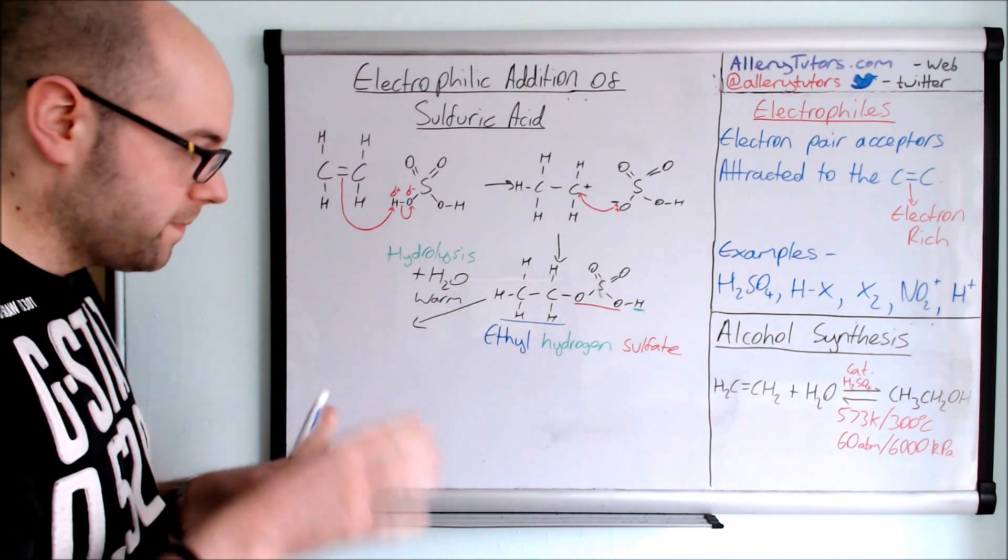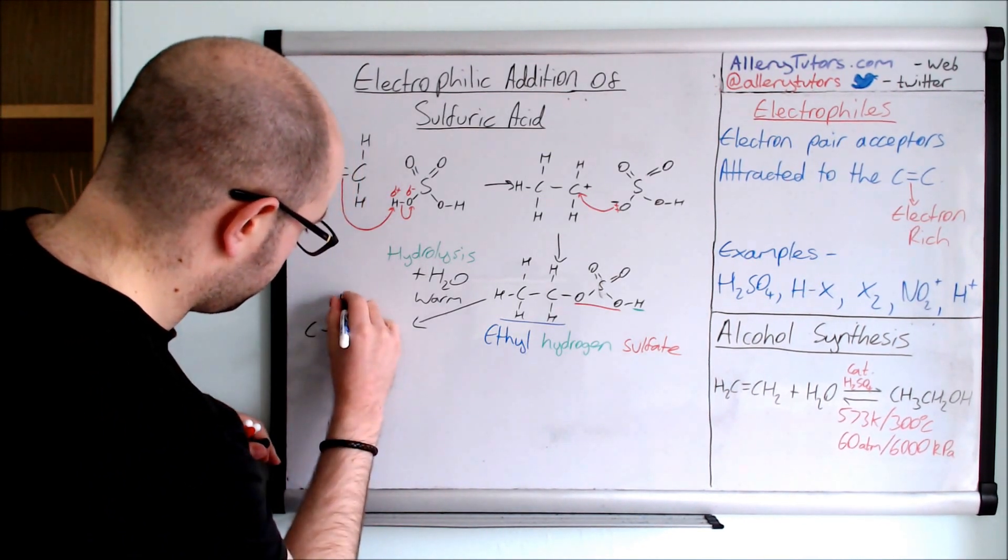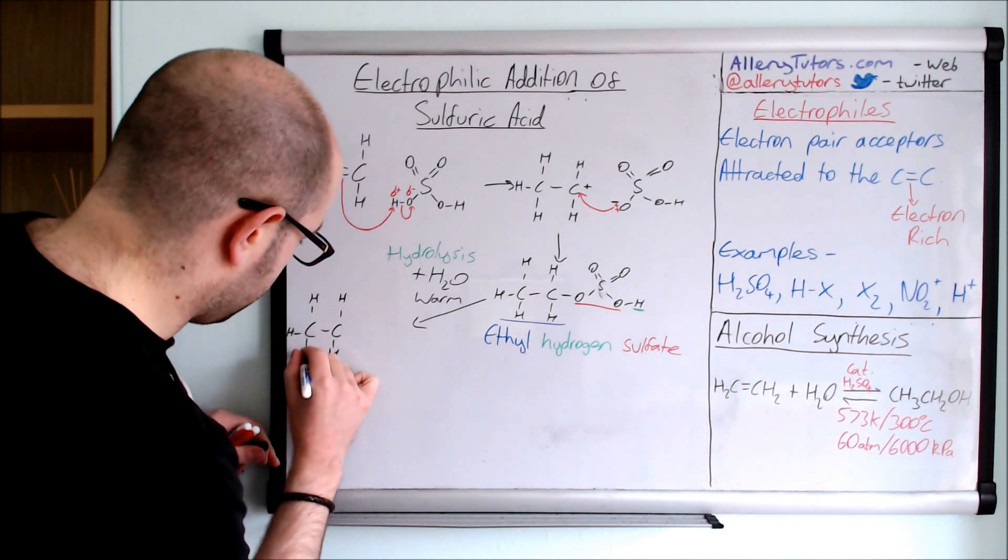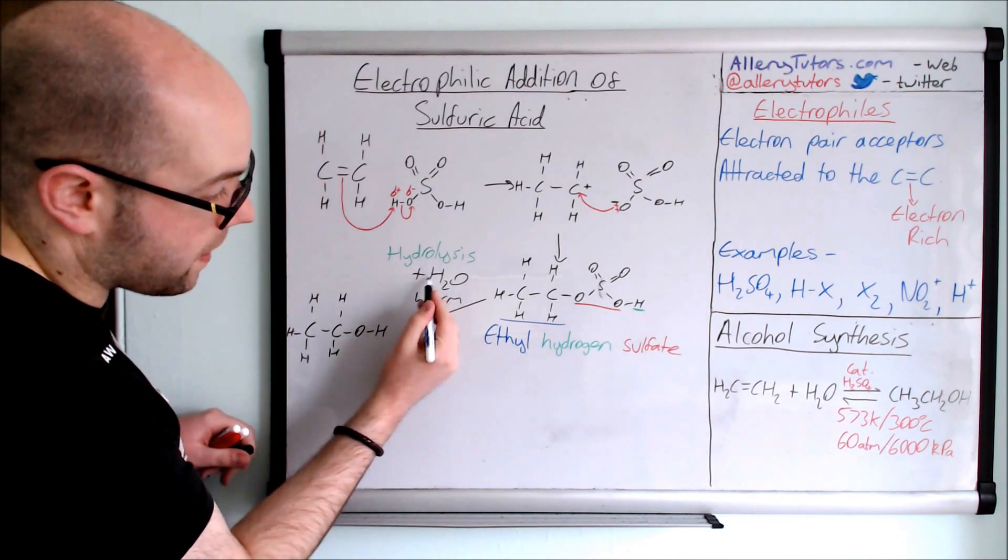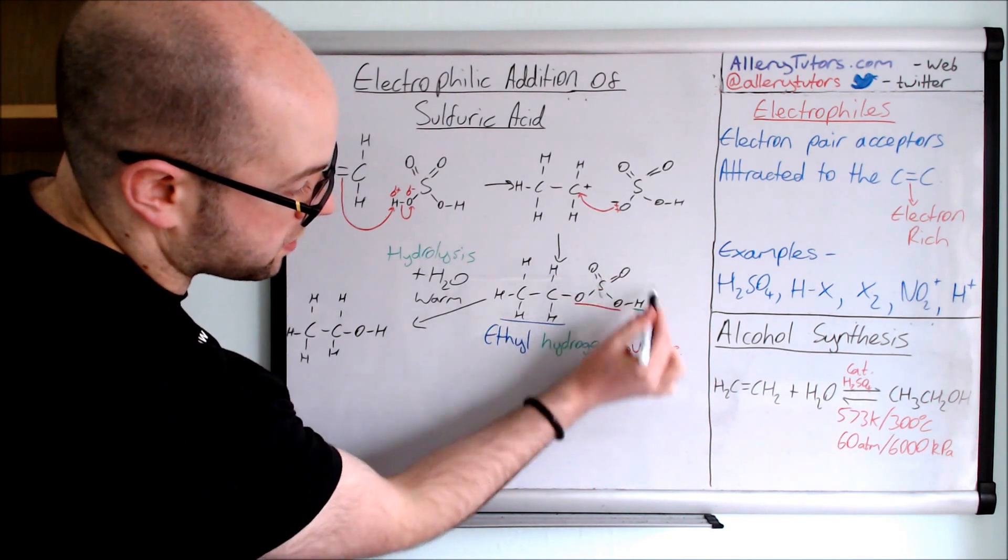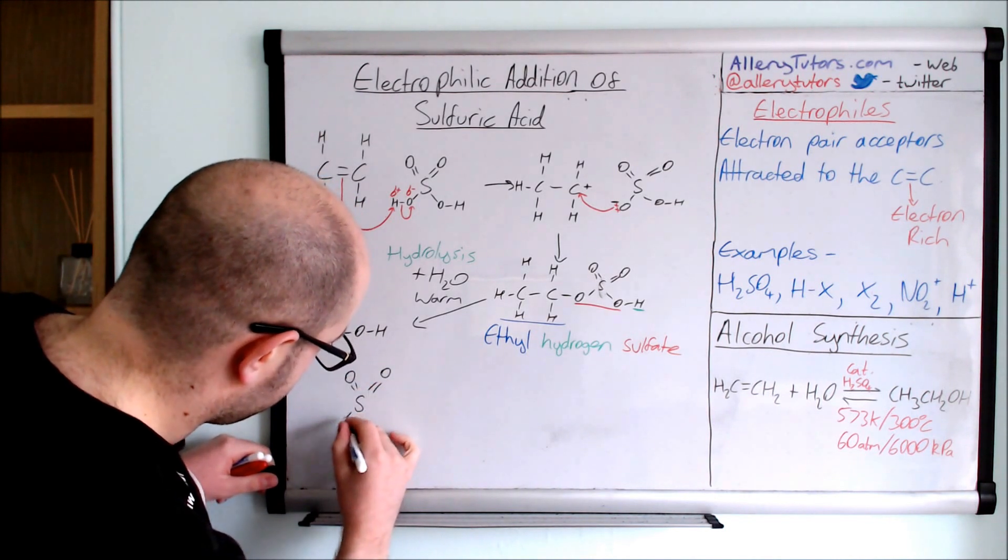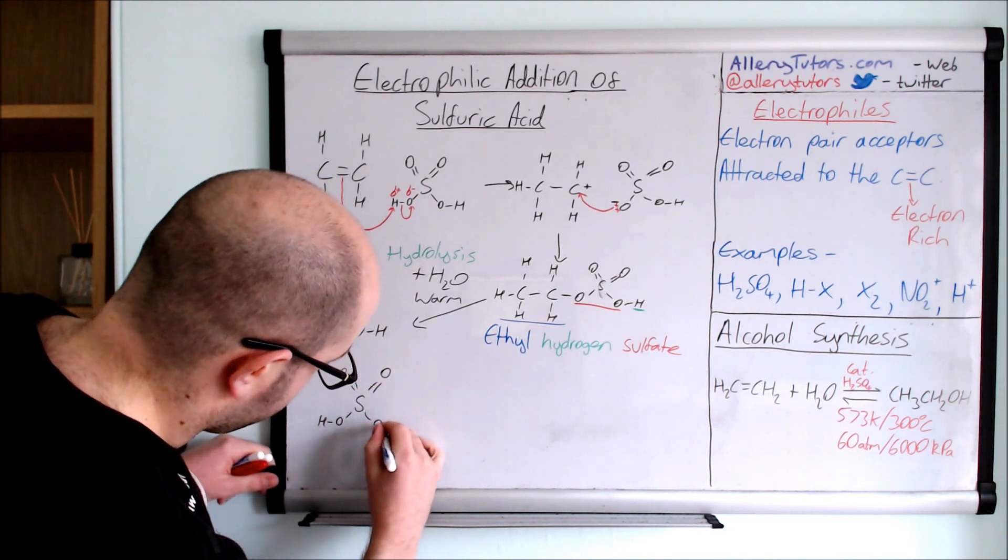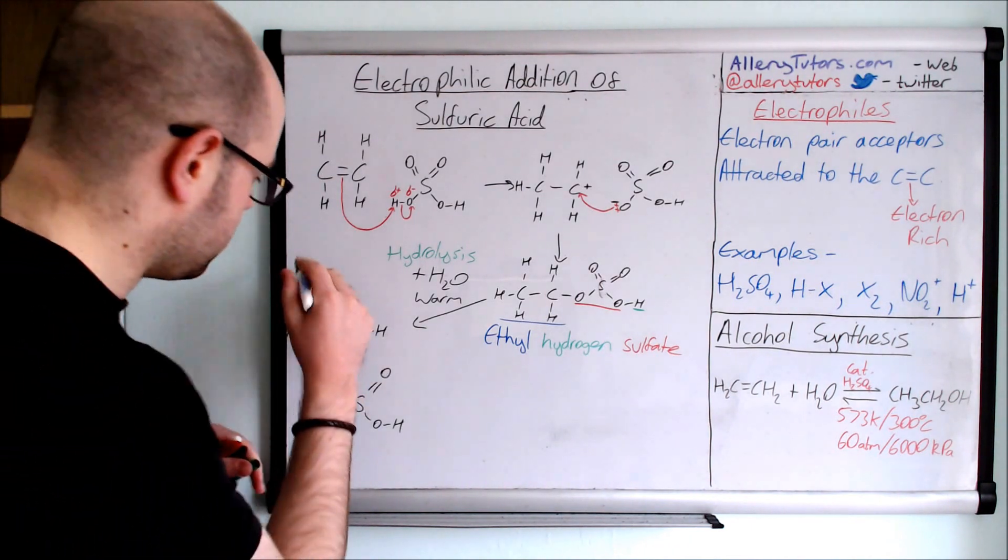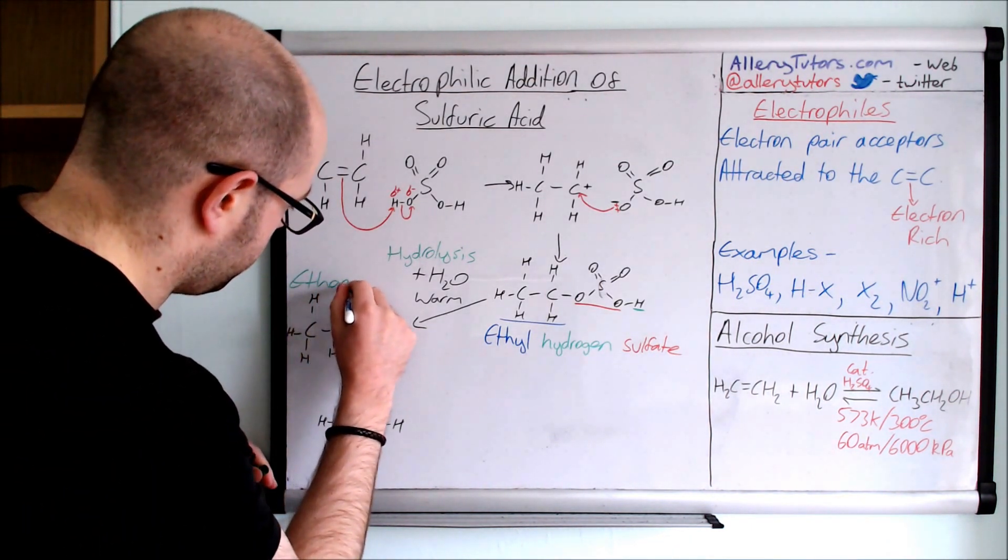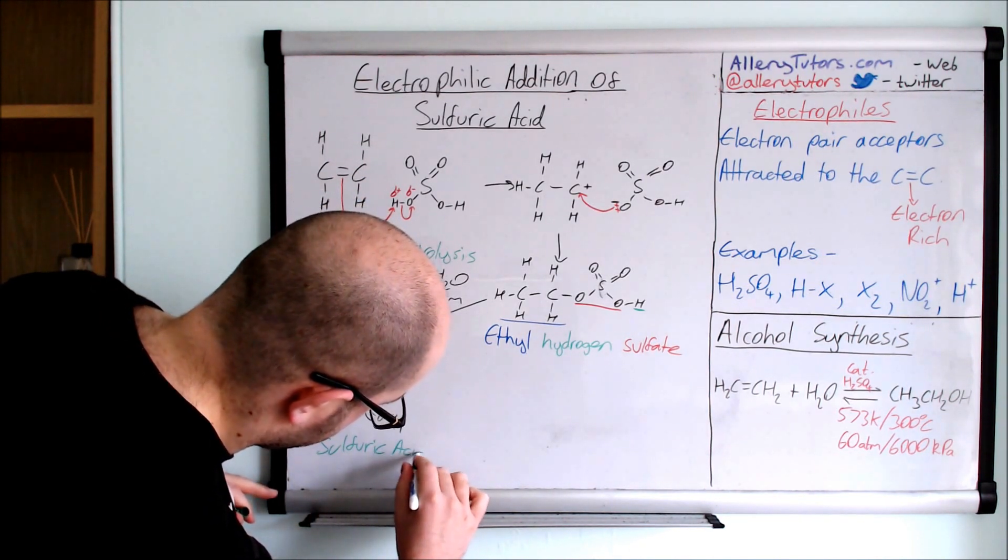And then effectively what you form is you form your ethyl. So let's draw the displayed formula. Lots of hydrogens. The OH, OH. So this OH has come from the water. There's a hydrogen left over and that hydrogen loops onto here because this has got to break off. And then effectively what we're left with is our sulfuric acid back again. There you go. There's your sulfuric acid. Let's put that, let's write that down there. Write the names of other things. So this is called ethanol. This is called sulfuric acid. And voila, there you go. This is your acid.